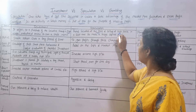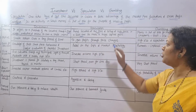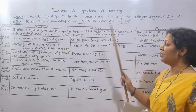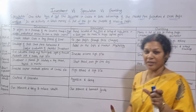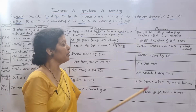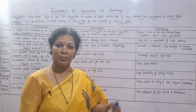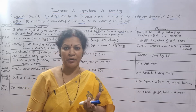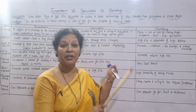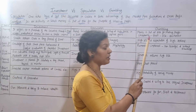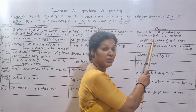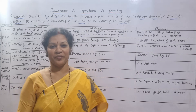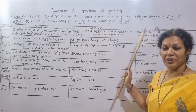Speculation means buying securities at a lower price and selling at a high price in a short time to make large capital gains. Gambling means money is put at risk for making profit — you want to earn, but the probability is less and the risk is high. Gambling always involves uncertainty, thrill, and excitement rather than a focus on earning profit.